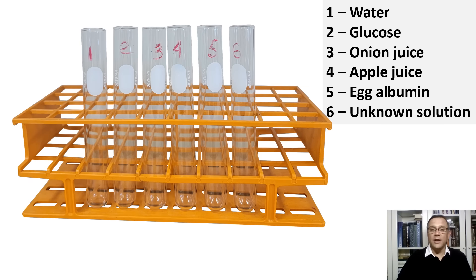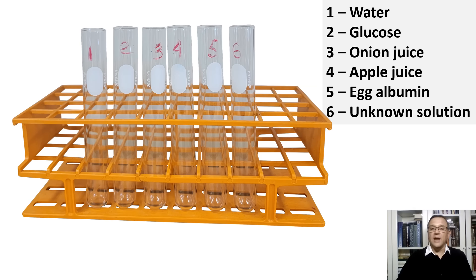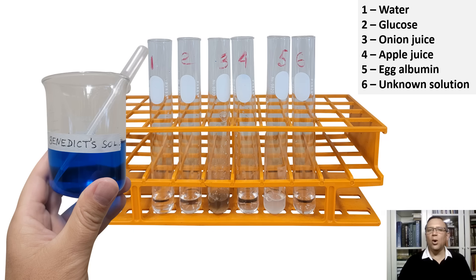In the next three test tubes, we will add the same amount of tested food. I will put onion in test tube three, apple juice in test tube four, and egg albumin in test tube five. In test tube six, I will add an unknown solution. At the end of the experiment, by comparing the colors, you will need to determine what the unknown solution is — water, glucose, onion juice, apple juice, or egg albumin. Here are all our test tubes filled with various solutions, controls and food samples. Which of these foods will contain reducing sugars?